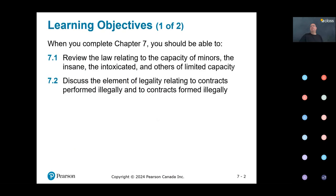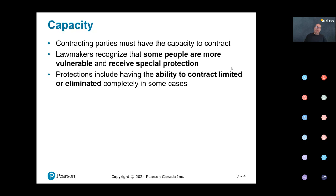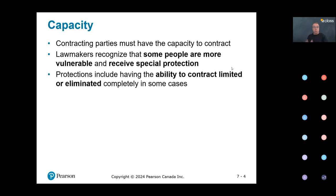Let's start with capacity. Capacity is a required element because the law understands that some parties may be more vulnerable when entering into business transactions and contracts. Because they are more vulnerable, the law affords them special protection — either by limiting their contracting capacity or sometimes eliminating it completely.